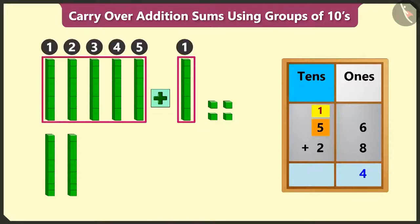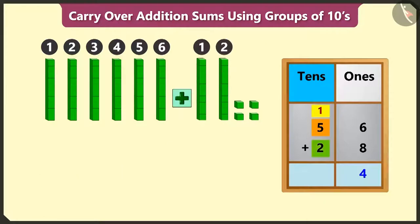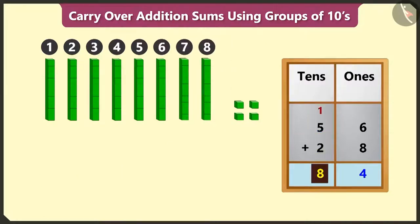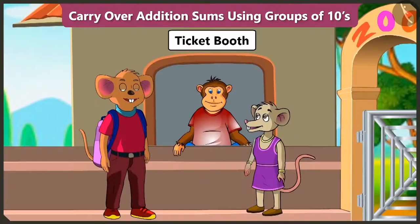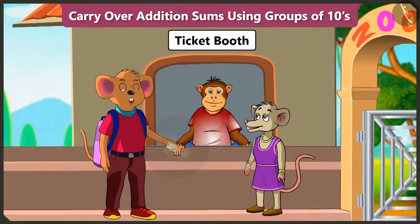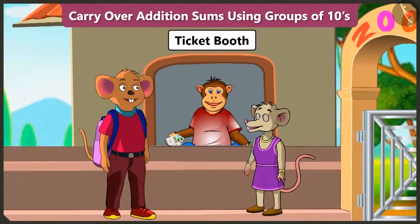Now, adding 1 and 5 will make 6 and 6 added to 2 will make 8. Now, 8 tens and 4 ones which means we have to give 84 rupees. Perfect answer. Please take 84 rupees. Take your ticket. Let's go inside.